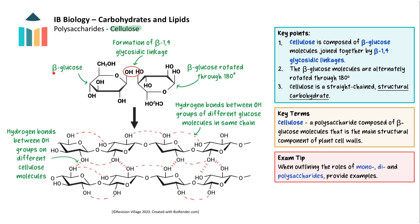Cellulose is composed of beta glucose molecules joined together by beta 1,4 glycosidic linkages. The beta glucose molecules are alternately rotated through 180 degrees, thereby forming a straight unbranched chain. Many hydrogen bonds form between hydroxyl groups of different glucose molecules in the same chain and also between adjacent cellulose chains, forming fibrils. Bundles of fibrils together form fibres, like string making up rope. This structure gives cellulose its strength to be the main structural component of the cell wall in plants.